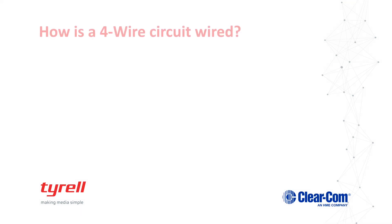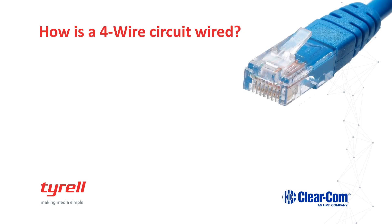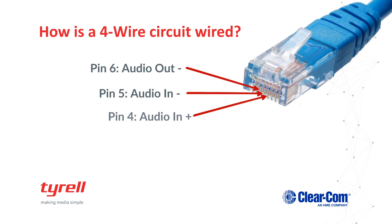And now we move on to 4-wire. 4-wire is the successor to 2-wire, and is a full duplex communication system that supports transmission in both directions over separate physical connections. What this means is that four discrete lines are used for a total of two channels, and this is where the name 4-wire is derived from. As you can see in this example, it uses the very common RJ45 connector, and it only uses four of the eight lines in that RJ45 connection.